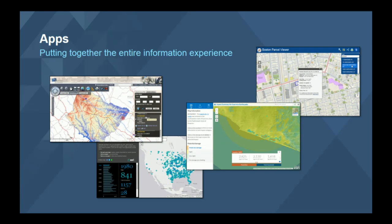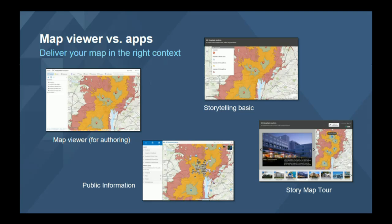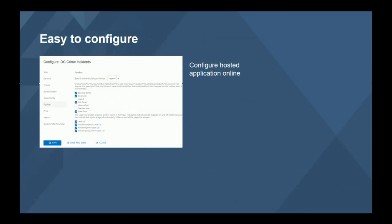For example, we have a terrain profile application template that pulls in a terrain model underneath your map so you can derive terrain profiles by drawing on it. The public information map provides connections to social media — you can add Instagram photos or tweets, and that's built into the application. Each application is different and meant to solve different problems. A lot of people use the Map Viewer to share their maps, but we'd recommend thinking differently — the Map Viewer is actually an authoring tool. Use one of the other templates to share with others and provide a better experience.